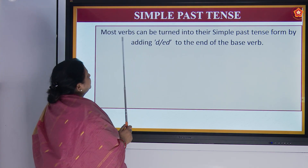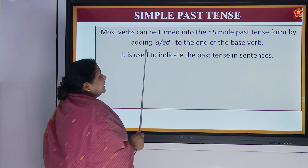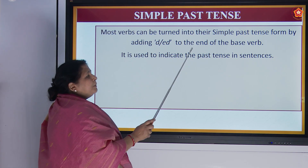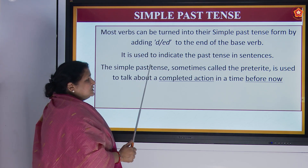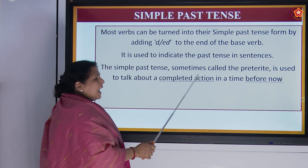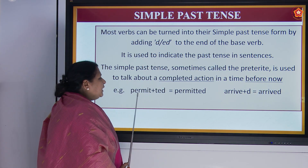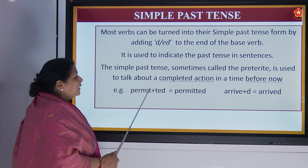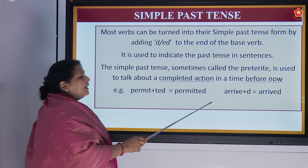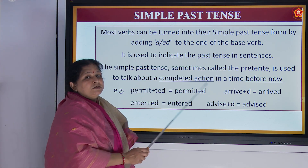Simple past tense — most verbs can be turned into their simple past tense form by adding 'd' or 'ed' to the end of the base verb. It is used to indicate the past tense in sentences. The simple past tense, sometimes called the preterite, is used to talk about a completed action in a time before now. Example: permit → permitted (p-e-r-m-i-t-t-e-d). Arrive → arrived. Enter → entered. Advise → advised.